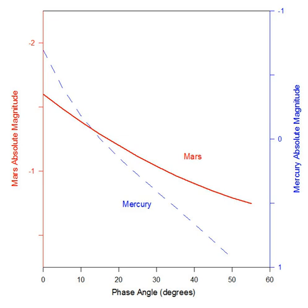Highly accurate new observations covering the widest range of phase angles to date — 2 to 170 degrees — were carried out by A. Malama, D. Wong, and R. Howard using the Large Angle and Spectrometric Coronograph on the Solar and Heliospheric Observatory Satellite. They also obtained new CCD observations from the ground. These data are now the major source of the phase curve used in the Astronomical Almanac for predicting apparent magnitudes.